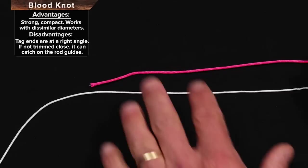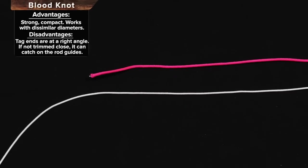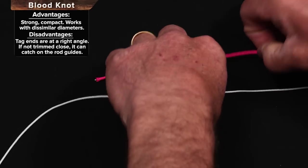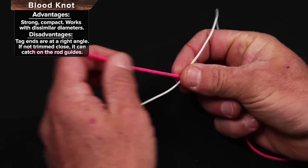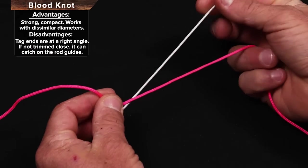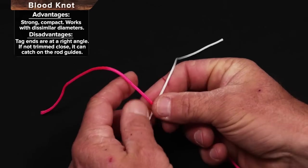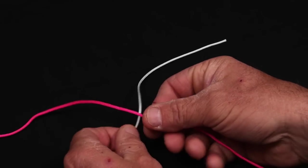The blood knot, also called the barrel knot, is great for attaching two dissimilar pieces of line together. Could be monofilament to monofilament, monofilament to fluorocarbon, or braid to fluorocarbon. Use it in everything from trout to tarpon.